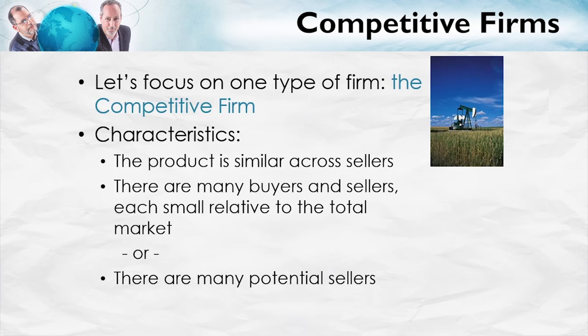We're focusing in this chapter on the competitive firm — the firm in a competitive market. What are the characteristics of this firm and market? Well, the product that the firm sells is similar across many different sellers. Think about a stripper oil well: this small oil well produces oil which is pretty much the same as the oil produced by the well next door, which is pretty much the same as the oil produced by a well in Saudi Arabia, or from Mexico or the North Sea. Oil is pretty much the same all over the world. Or think about wheat, soybeans, steel, concrete, or paper — all competitive markets where the product is similar across sellers. In addition, in all of these markets there are many buyers and sellers, each small relative to the total market.